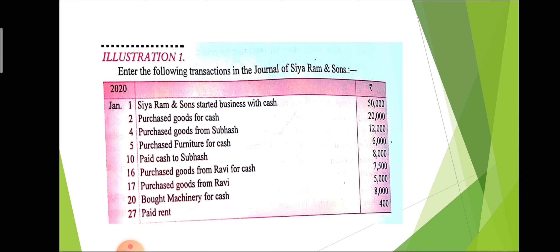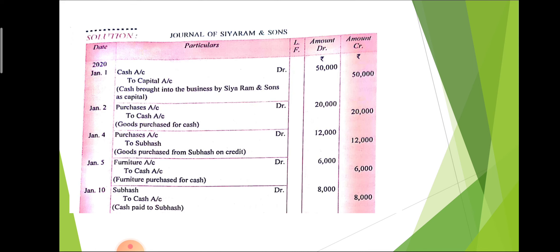Here is illustration number one with date-wise entries. On January 1st, CRM and Sons started business with cash — that amount is called capital, affecting capital account and cash account. Cash comes into the business so it is debited, and the journal entry is: cash account debit to capital account, by rupees 50,000. In the date column we mention the date, in the LF column we mention the ledger folio number, and the same amount is mentioned on both the debit and credit sides.